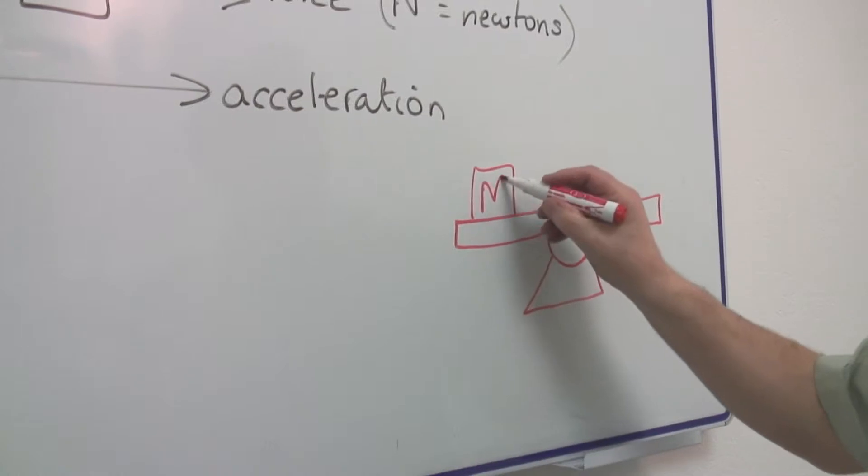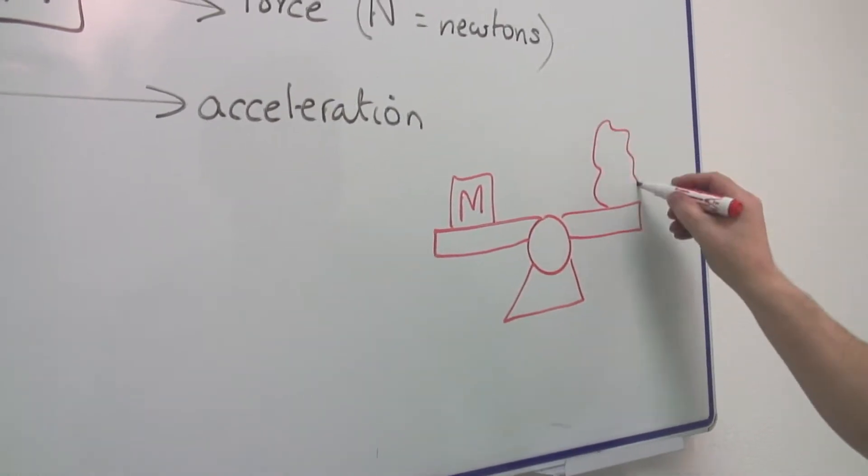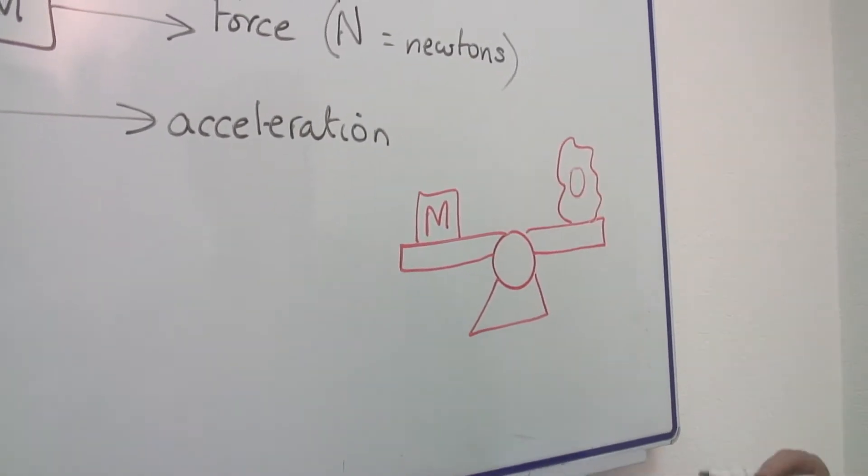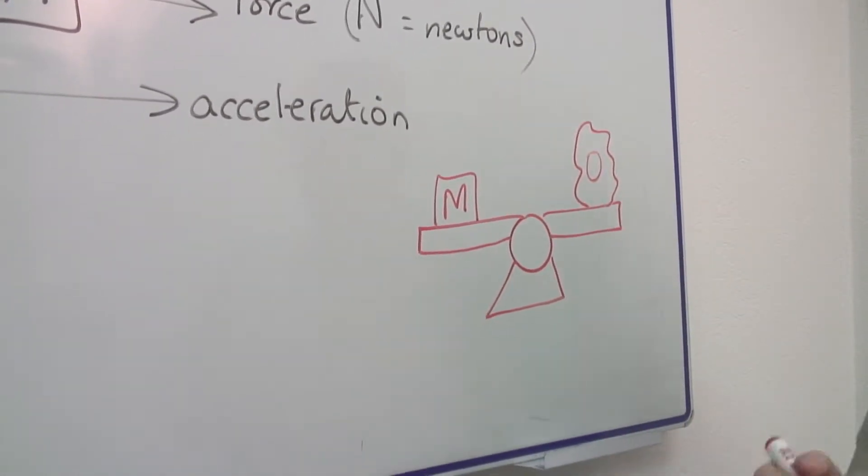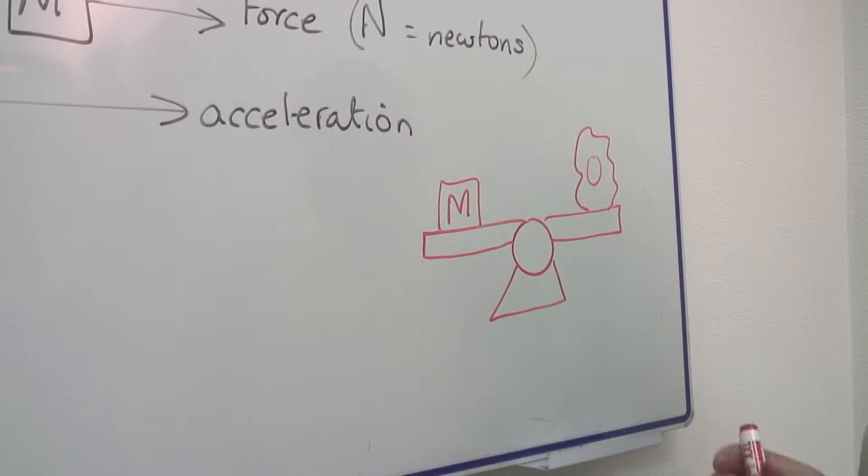I will put a mass on this side and I'll put the object I want to measure the mass of on the other side and balance them. That's a standard device for measuring mass.